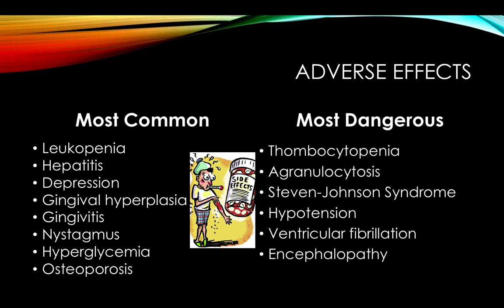There are many adverse effects to watch for. The most common are leukopenia, hepatitis, depression, gingivitis, and hyperglycemia — especially in diabetics, because Dilantin inhibits insulin. There have also been related cases of osteoporosis and osteomalacia. The more dangerous adverse effects are thrombocytopenia, agranulocytosis, and Stevens-Johnson syndrome. Always keep an eye out for these when giving Dilantin.